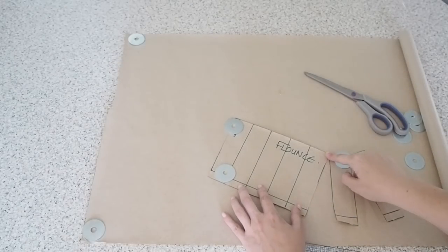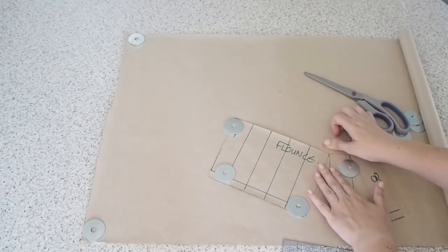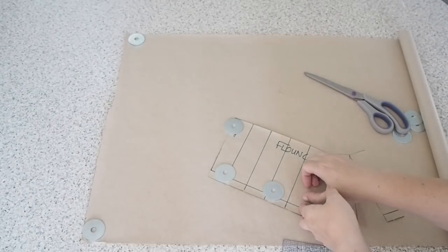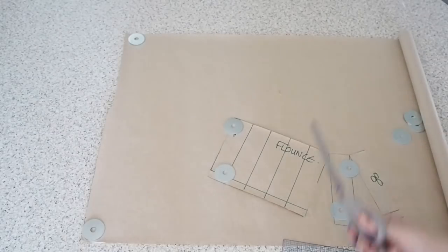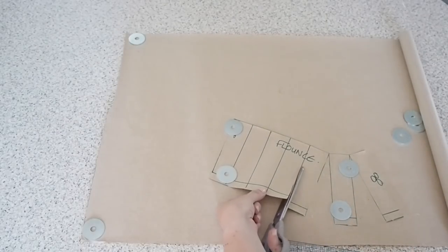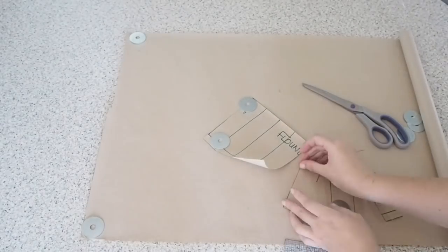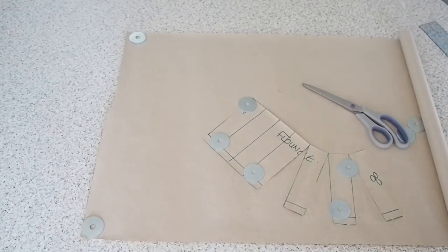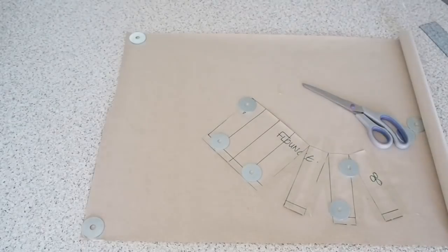So for my second line doing exactly the same. And what I'm trying to do here is make sure that my pattern piece lies really nice and flat. I don't want any puckers in my paper or anything like that. I want everything to be nice and neat and tidy. So I'm going to do the same thing the whole way around the flounce itself. So slashing open each one of those lines that I drew, spreading it by two inches and sticking everything down nice and neatly.